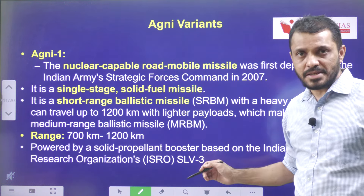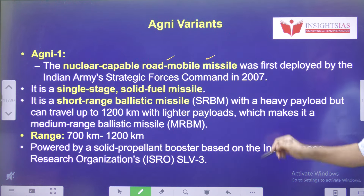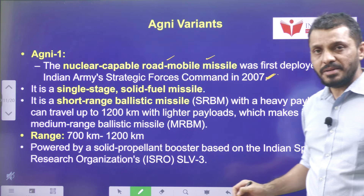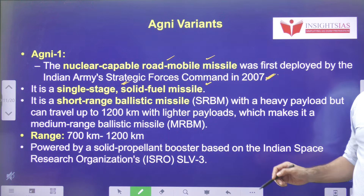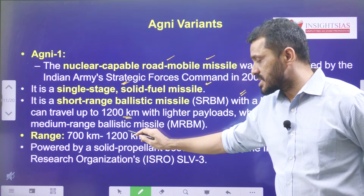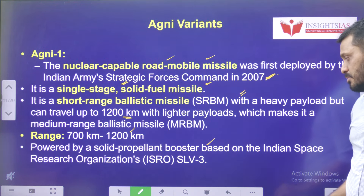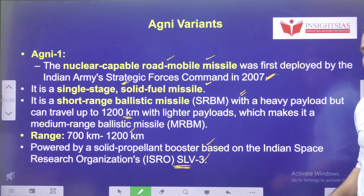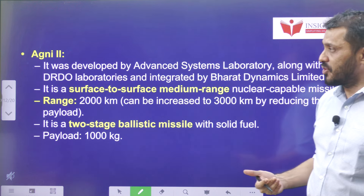Now let's look at the various Agni variants. Agni 1 is a nuclear-capable, road-mobile missile, first tested in 2007. It is a single-stage, solid-fuel, short-range ballistic missile with a range of 700 to 1200 kilometers. It is based on a solid propellant booster and was developed based on the SLV-3 platform by ISRO.